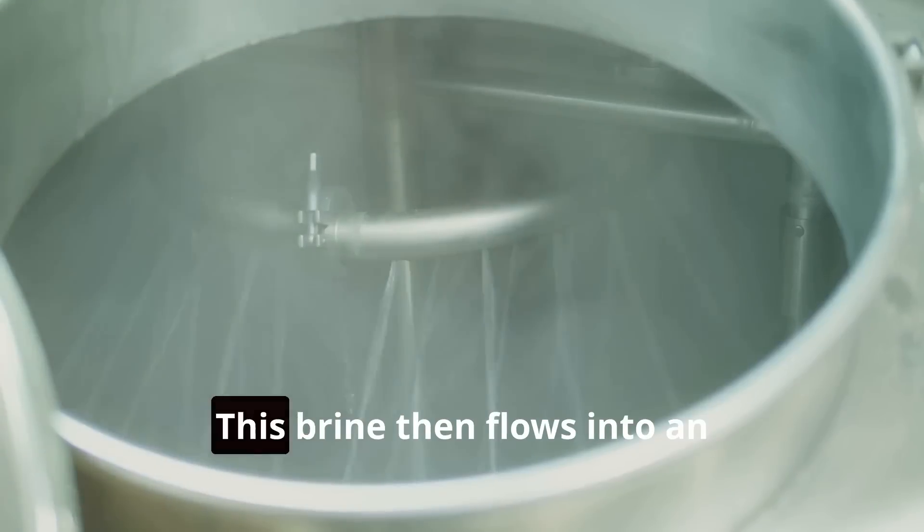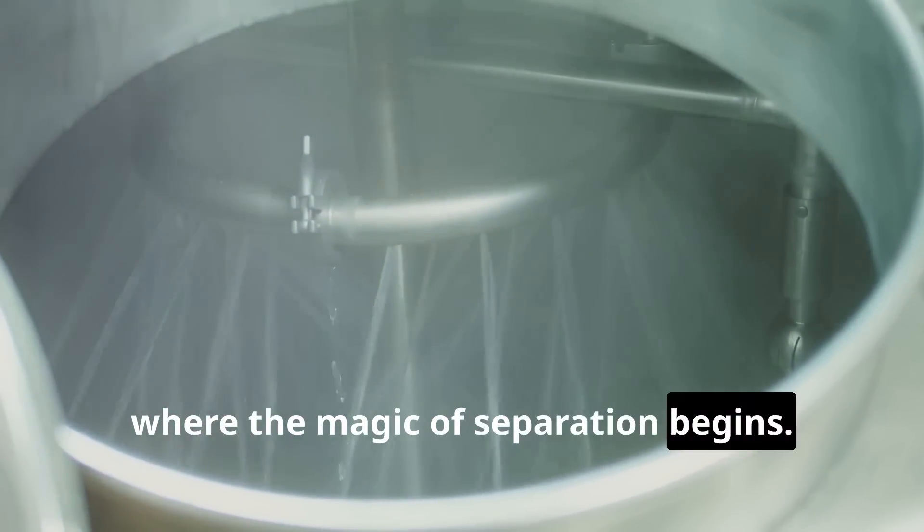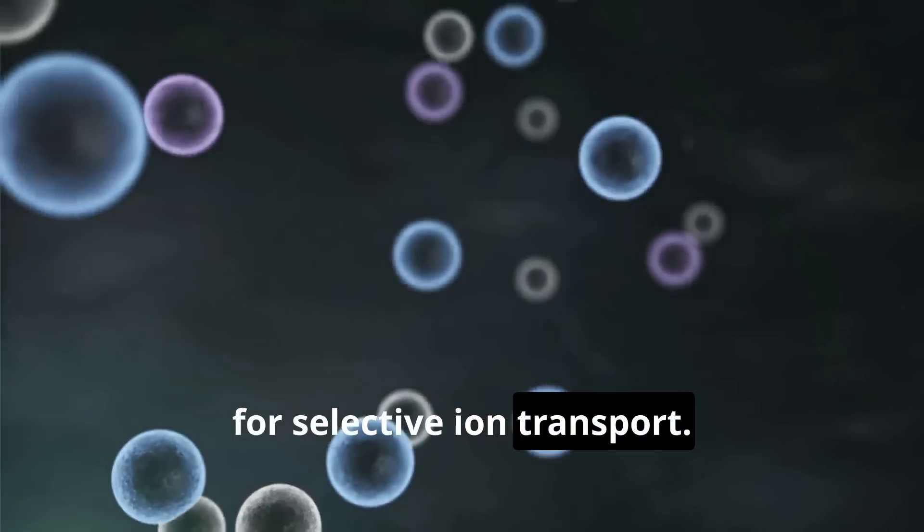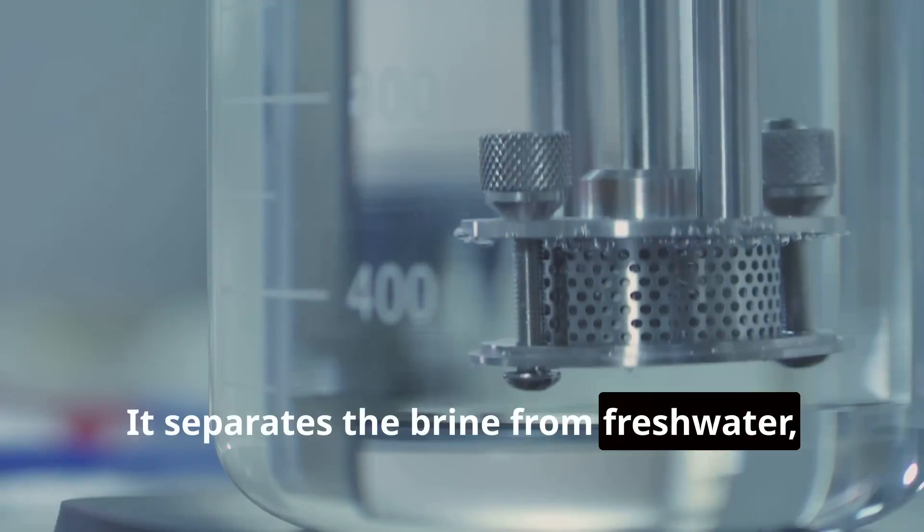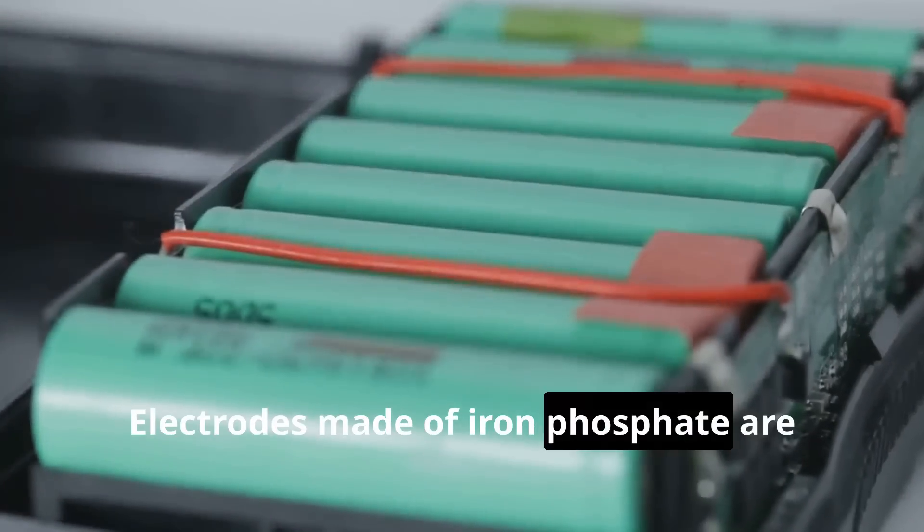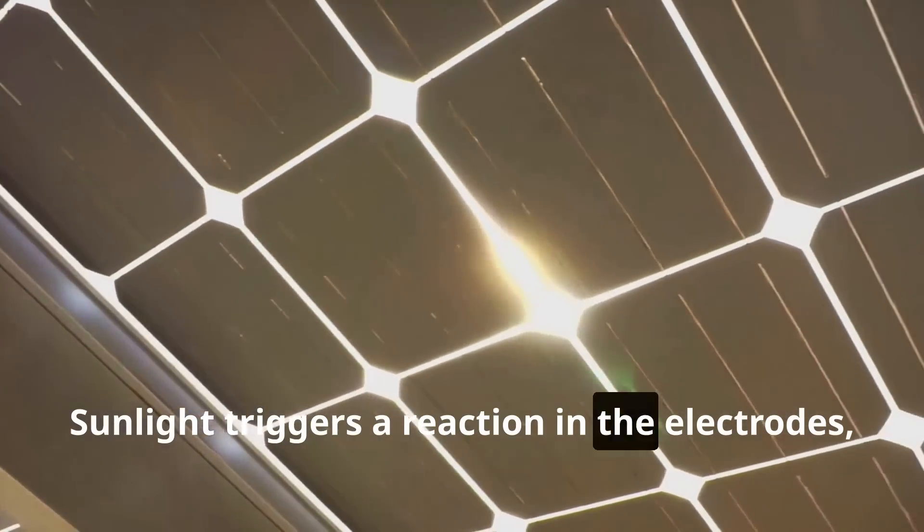This brine then flows into an electrochemical cell, where the magic of separation begins. This cell has a special membrane designed for selective ion transport. It separates the brine from fresh water, ensuring only lithium ions pass through. Electrodes made of iron phosphate are placed on either side of the membrane.